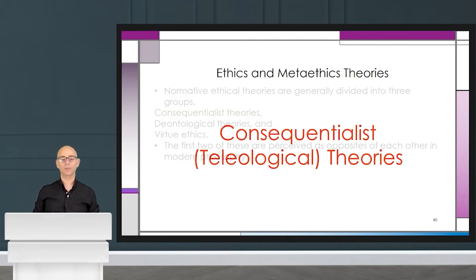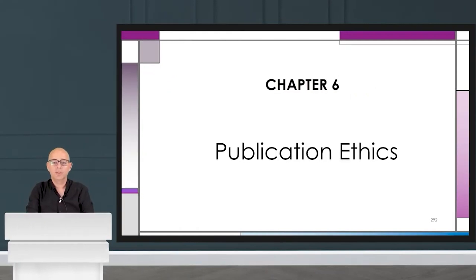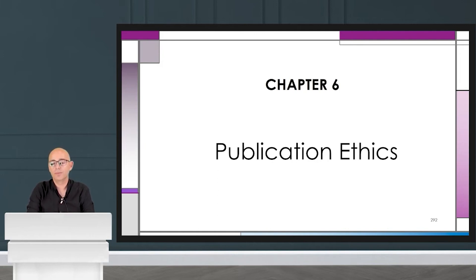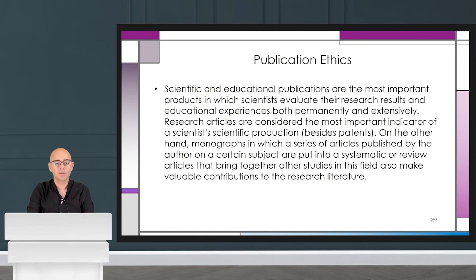Chapter 6 is titled publication ethics. We can continue with further details about publication ethics. We already gave some broad explanations about publication ethics, and now we can go further and be more specific. Scientific and educational publications are the most important products in which scientists work.